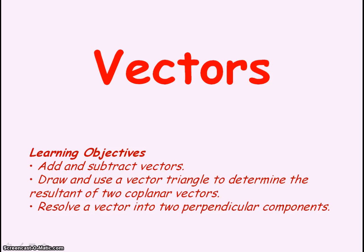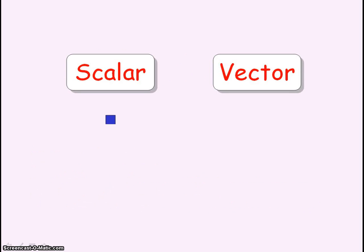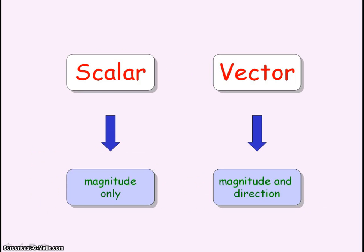We're going to be looking at vectors, adding vectors, subtracting vectors and resolving vectors. A scalar quantity only has magnitude, whereas a vector quantity has magnitude and direction. And when you add or subtract vectors, you need to take into account the direction, unlike for scalar quantities.